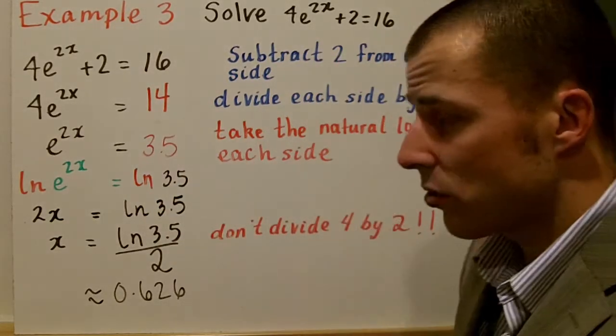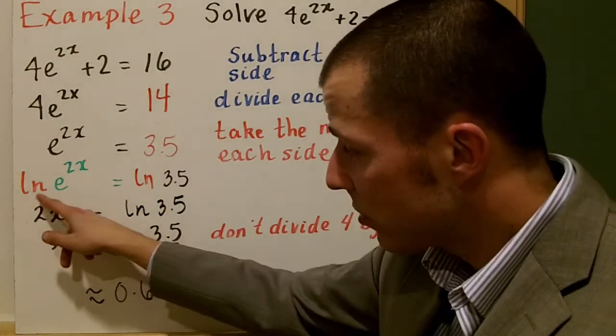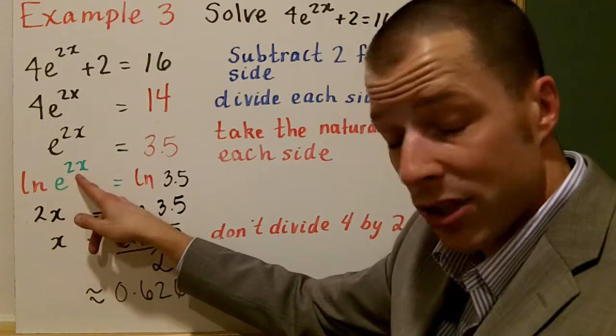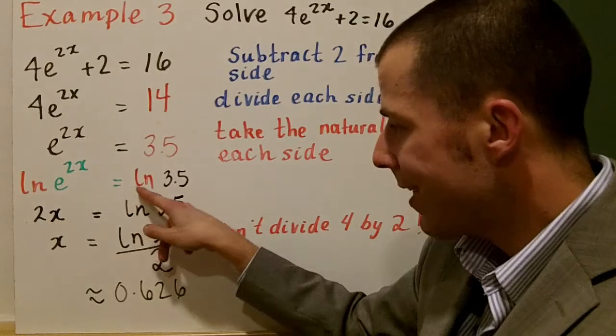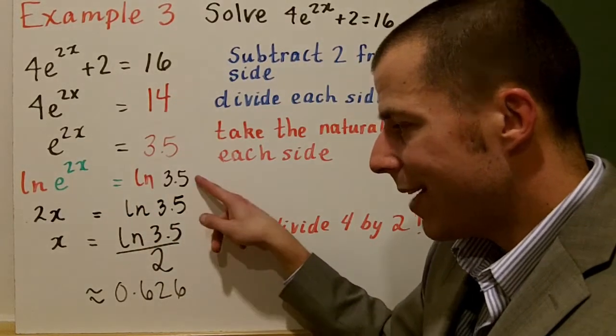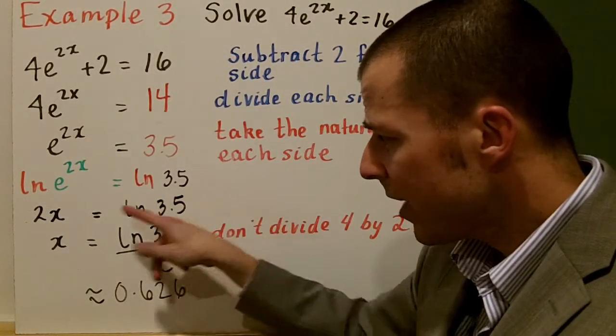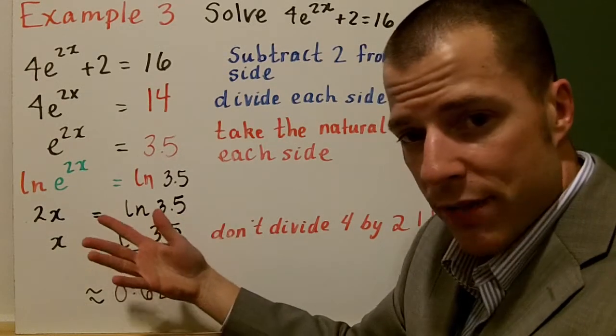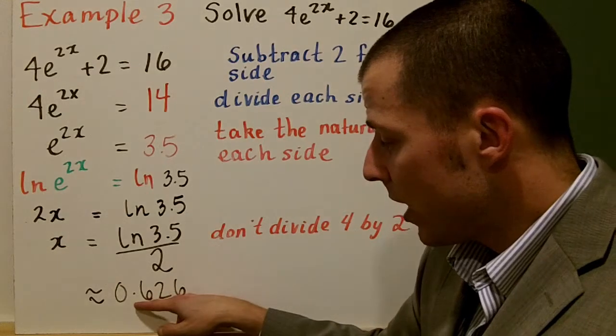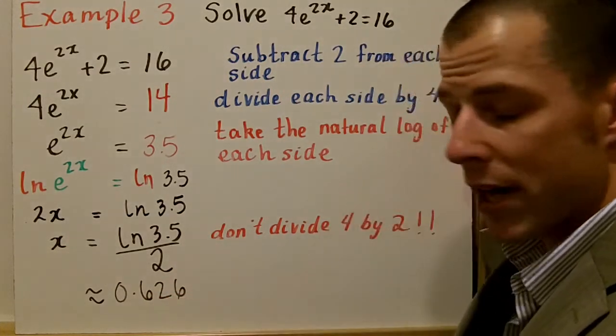Again, we're going to take the natural log of each side. The natural log of e will cancel out, and you're actually just going to be left with the power 2 times x, and the natural log of 3.5. Now, I'm going to leave that for now. So I have 2x is equal to the natural log of 3.5. Just divide each side by 2, and we get 0.626 approximately.